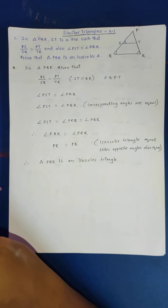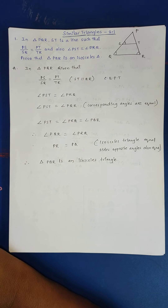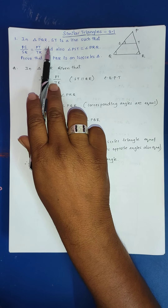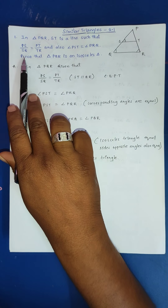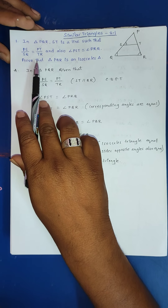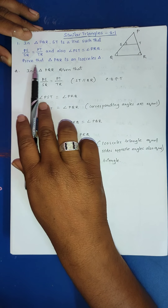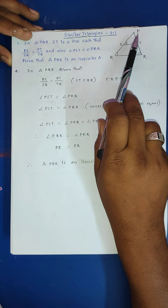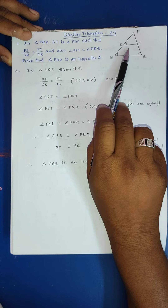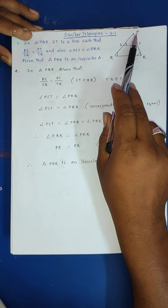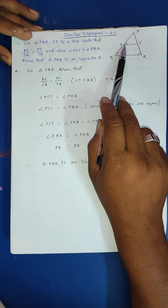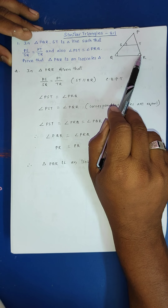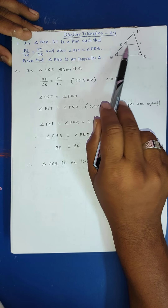Hi everyone. This problem is from the chapter Similar Triangles, Exercise 8.1, first problem. In a triangle PQR, ST is a line such that PS by SQ is equal to PT by TR, and also angle PST is equal to angle PRQ. Prove that triangle PQR is an isosceles triangle. Given this triangle PQR, angle S and angle R are the same angles.